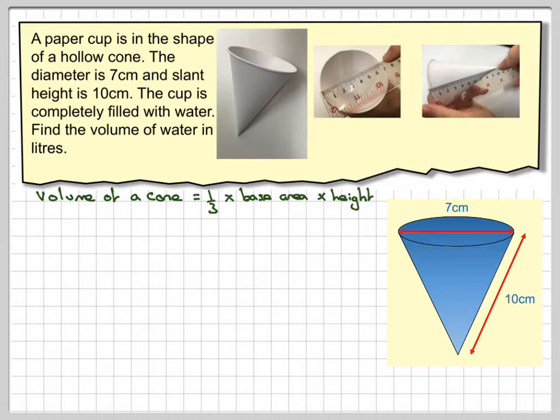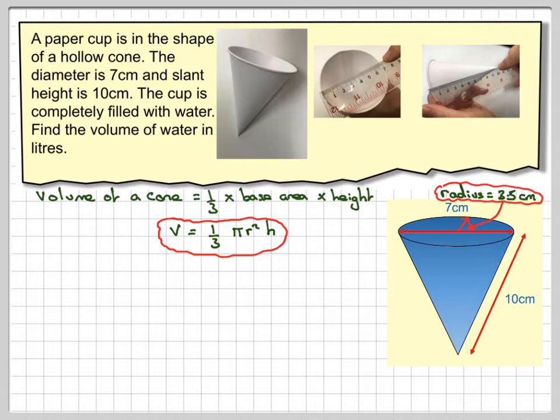So the base area is a circle, but the height that we want to find—the volume is one third pi r squared times the height. Now the height we want to find, the radius is that, half of the diameter, 3.5, but the height we want to find is this distance here, it's the vertical height. What we've got here in the question is the slant height.